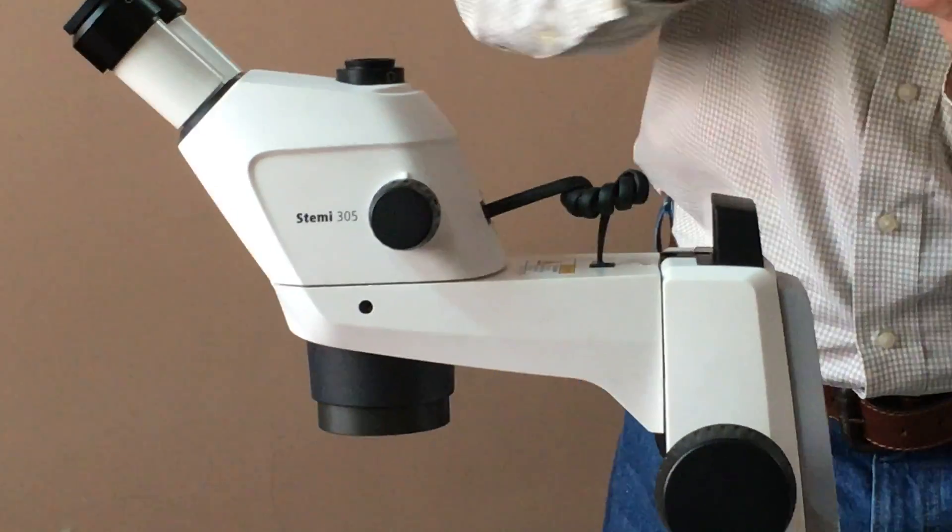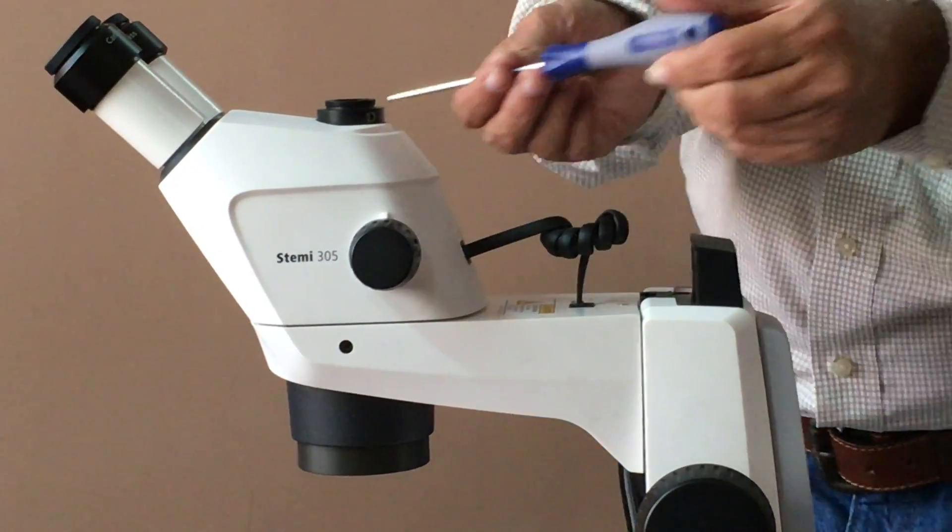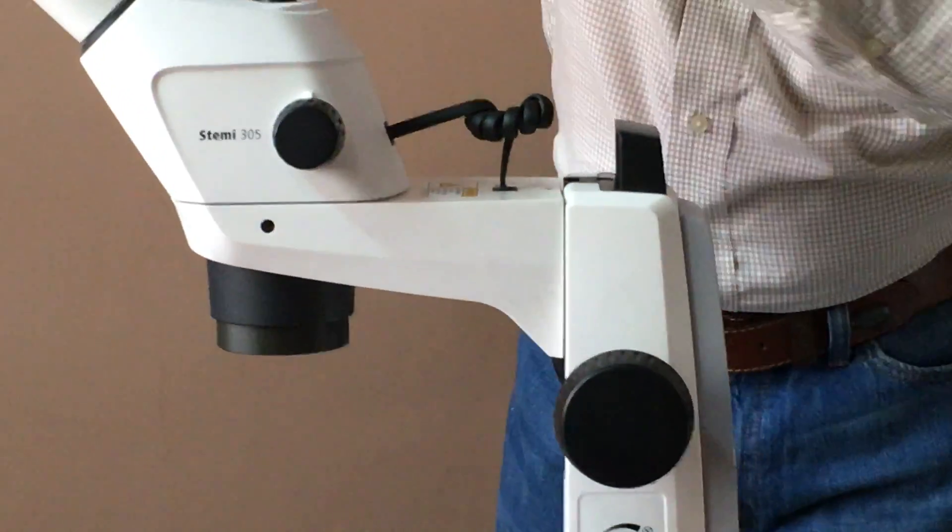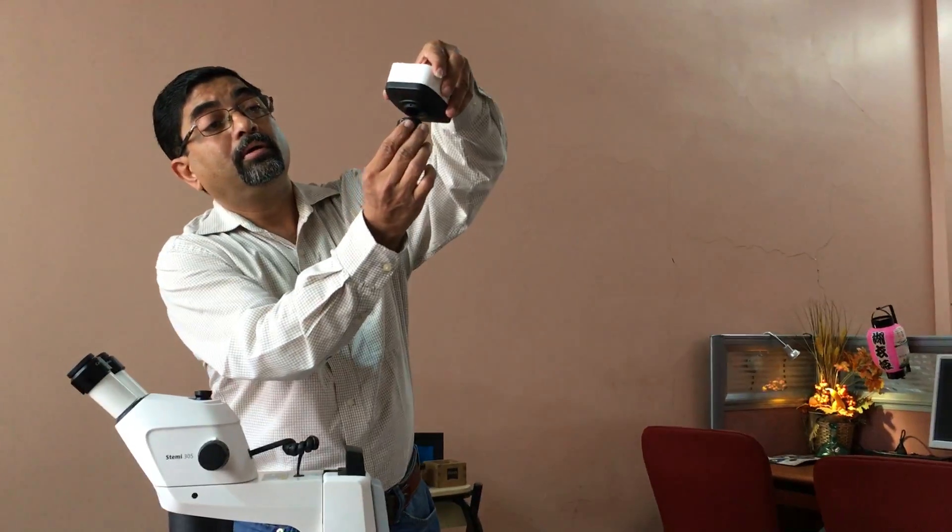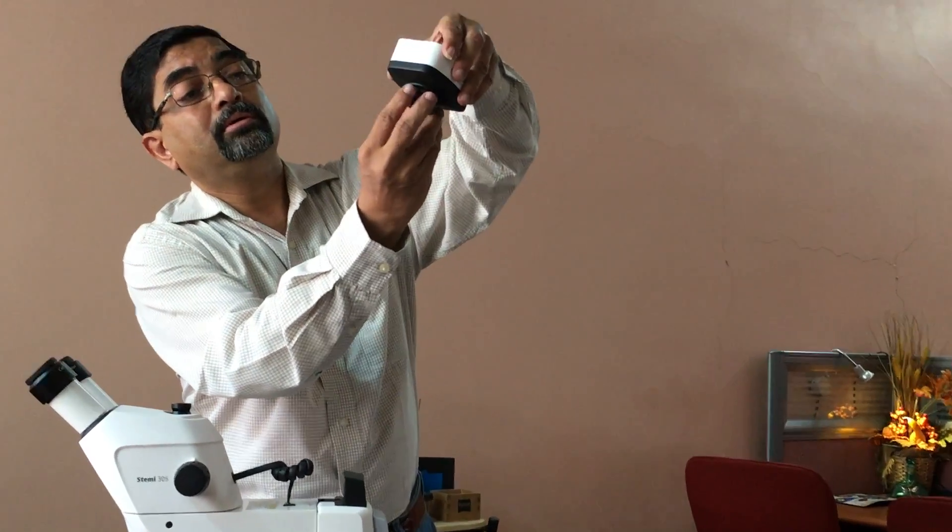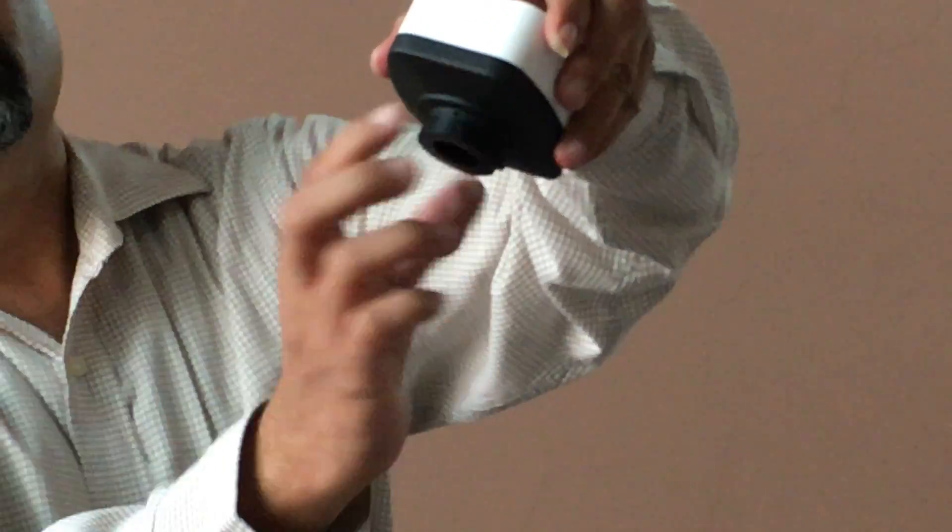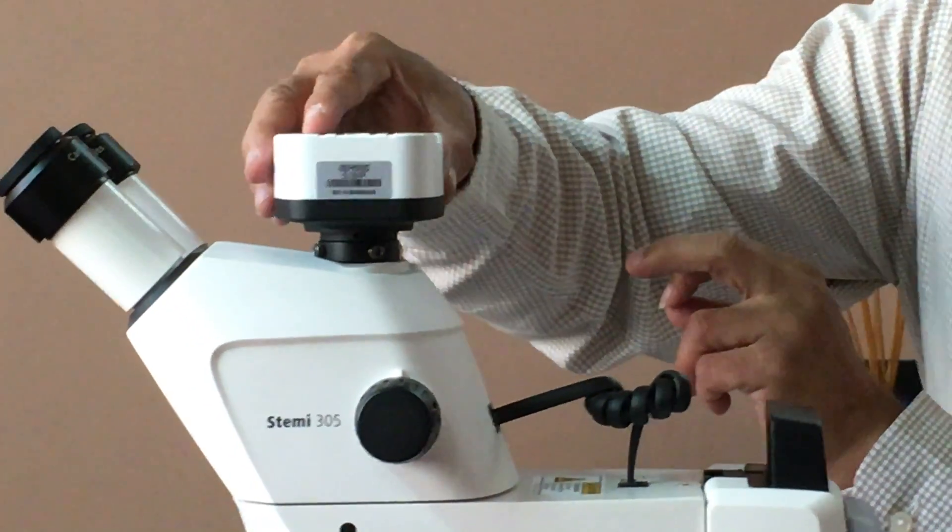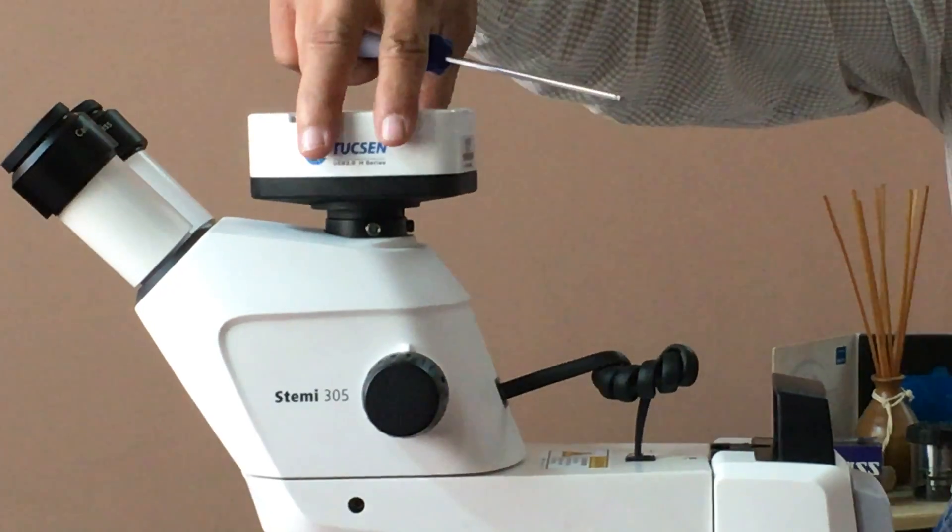Loosen the two allens, one here and one here. Take out the ring. Hold it like this. Hold the camera in your left hand. Screw in the ring to the camera. Now put the camera onto the trinacular. That's it. Put it this way so that the allens are accessible for tightening.